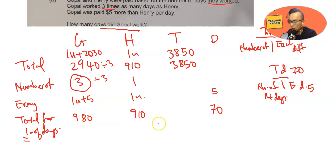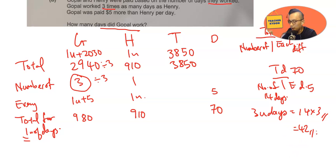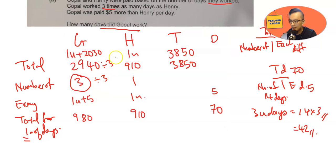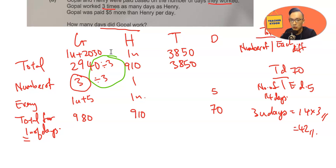Gopal worked three units of days, so 3 units equals 14 times 3, which gives 42 days. This is a pretty tricky question, and the trickiest part is dividing by 3 — you cannot compare someone who worked three times as many days to someone who worked one unit. You have to compare one unit of days with each other to figure out the question.